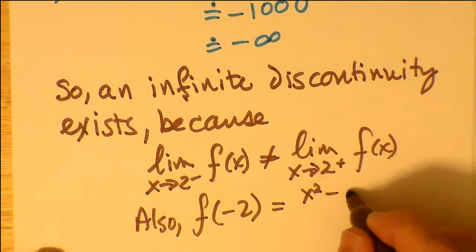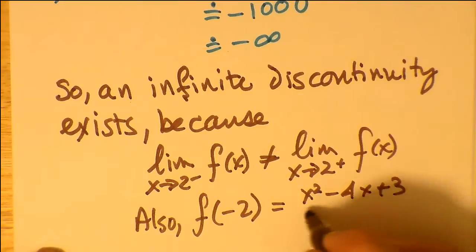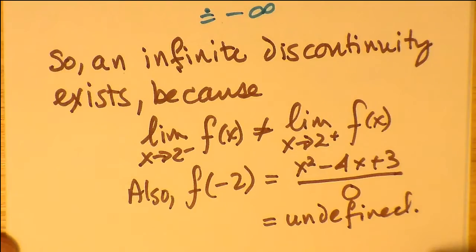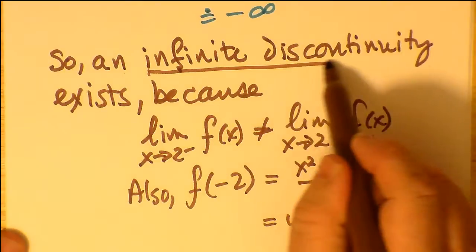Also, f of 2 is really just the polynomial divided by 0 which clearly is undefined.